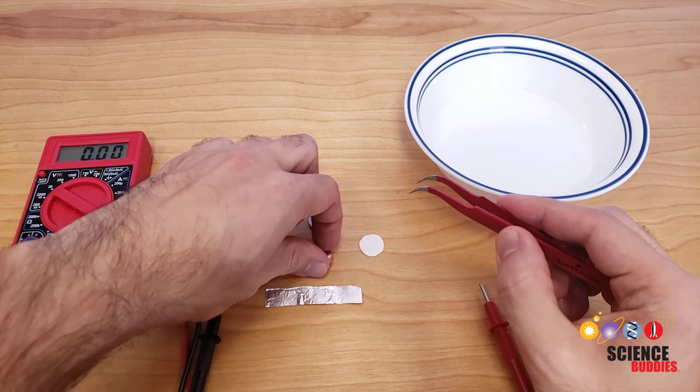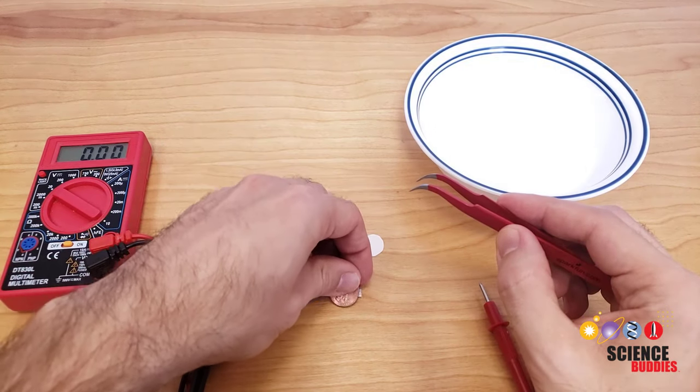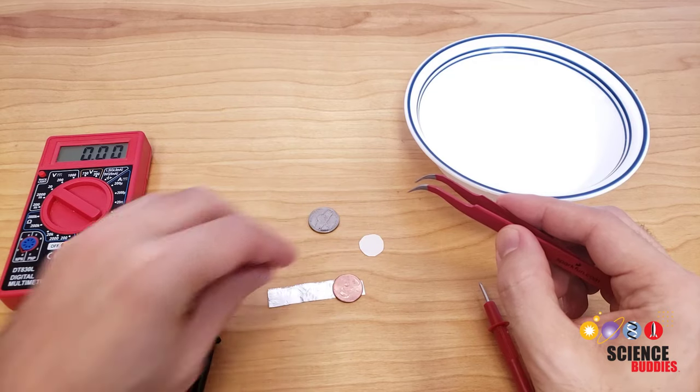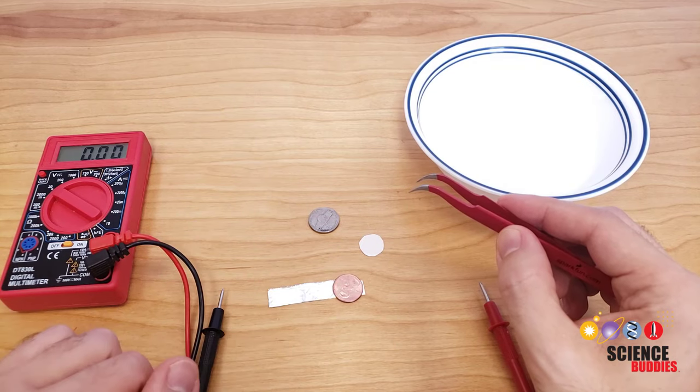Take your penny and place it on top of the aluminum foil strip. This strip is just going to make it easier to connect the multimeter probes later.